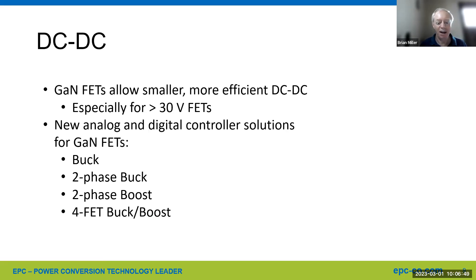DC-to-DC: in some portable vacuums and other equipment, you'd want a small, efficient DC-to-DC. Especially for less than or greater than 30 volt GAN FETs, the GAN FETs are very efficient in that range. Within the last year or so, there have been some new analog and digital controller solutions for GAN FETs — things like buck controllers, two-phase buck for high current, two-phase boost, and the four-FET buck-boost.